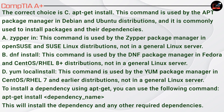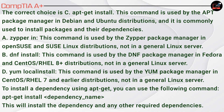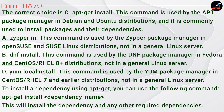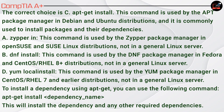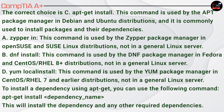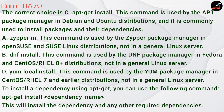The correct choice is C. apt-get install. This command is used by the APT package manager in Debian and Ubuntu distributions and is commonly used to install packages and their dependencies. A. zypper in is used by the Zypper package manager in openSUSE and SUSE Linux. B. dnf install is used by the DNF package manager in Fedora and CentOS/RHEL 8+. D. yum localinstall is used by YUM in CentOS/RHEL 7 and earlier distributions.